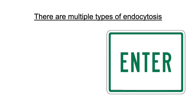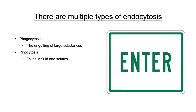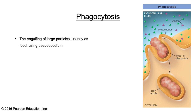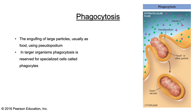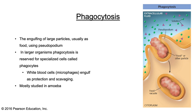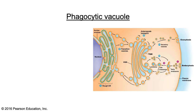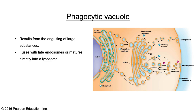Now we move on to ways that materials enter the cell: phagocytosis, which is engulfing of large substances; pinocytosis, which takes in fluid and solids; receptor-mediated endocytosis; and clathrin-independent endocytosis. Phagocytosis involves the engulfing of large particles — usually as food — using pseudopodia, as shown in the image. In larger organisms, phagocytosis is reserved for specialized cells called phagocytes, such as white blood cells, which do so for protection and scavenging. Phagosomes result from the engulfing of these large substances and fuse with late endosomes or mature directly into a lysosome.